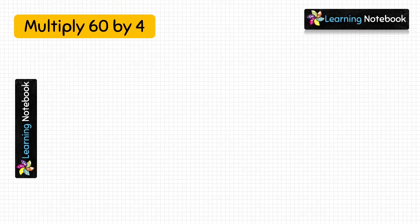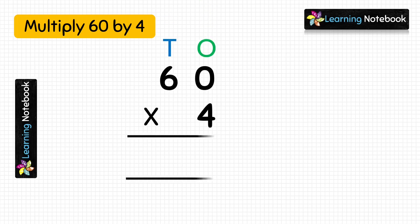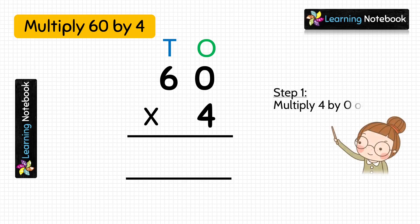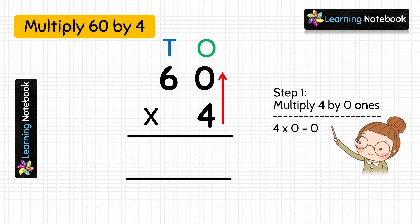Let's do the next question: multiply 60 by 4. Again, to multiply these two numbers, first let's write them in column as shown here. Now we will multiply them in two steps. In step 1, we will do 4 multiplied by 0. So 4 into 0 equals to 0. Because we learnt in the multiplication facts that when a number is multiplied by 0, the product is always 0.